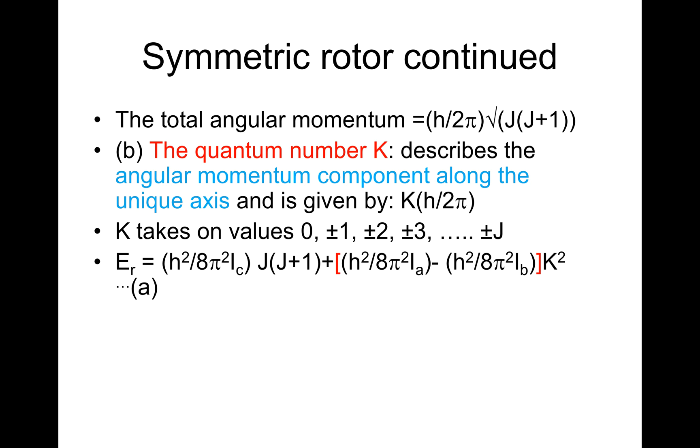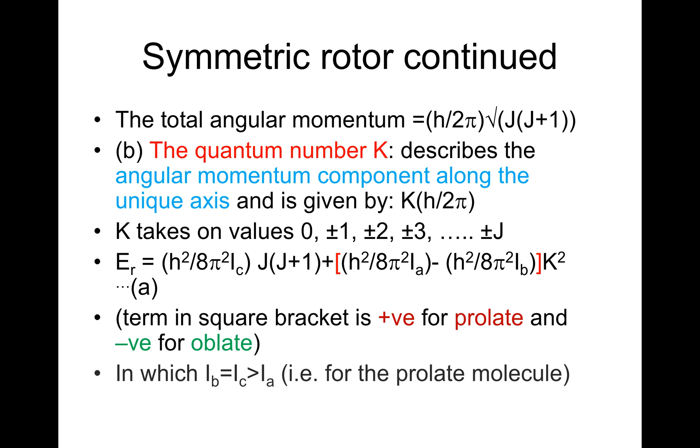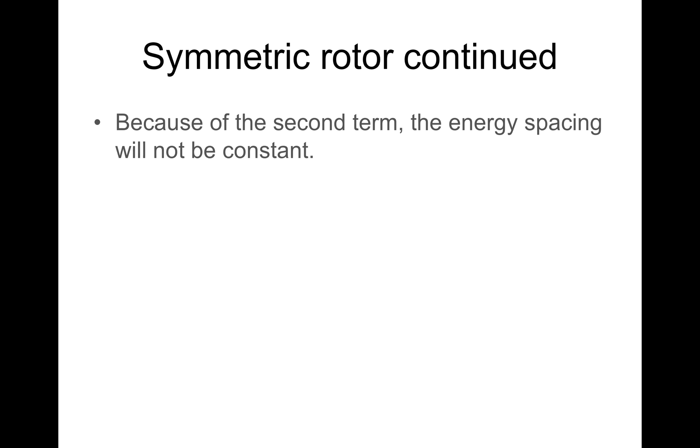Now the energy ER equals (h²/8π²Ic)J(J+1) plus [(h²/8π²Ia) minus (h²/8π²Ib)]K². Let's call this equation A. The term in square brackets is positive for prolate and negative for oblate, in which case Ib equals Ic but is greater than Ia for the prolate molecule.